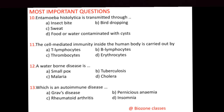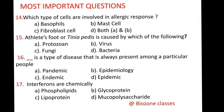Question number 14: Which type of cells are involved in allergic response? A. Basophils, B. Mast cells, C. Fibroblast cells, D. Both A and B. The correct option for this question is D, that is both A and B — basophils and mast cells.